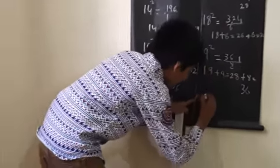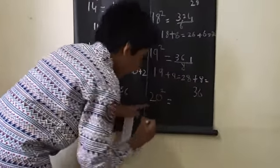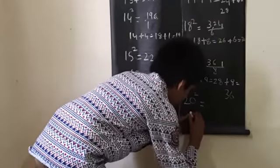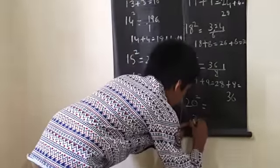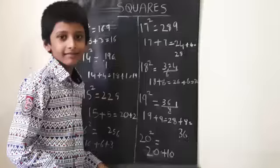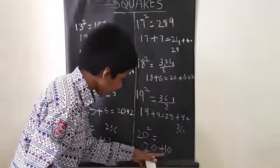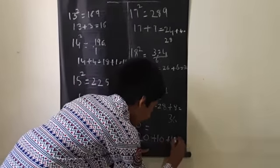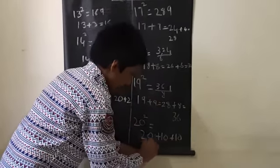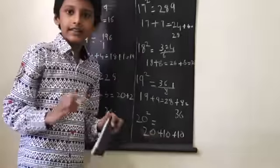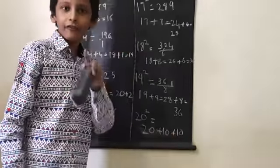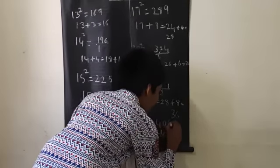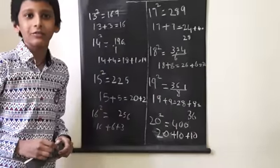Twenty square. See, how much more than ten? Twenty. Sorry, ten. Twenty plus ten. Twenty plus ten means ten plus ten. Thirty. Thirty plus ten: forty. This zero times zero is zero. Four hundred.